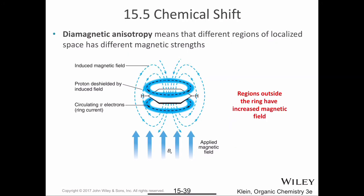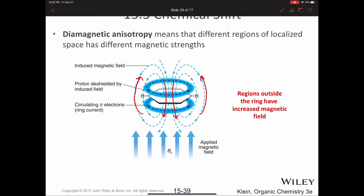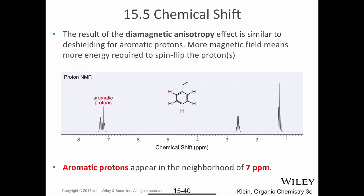Inside the benzene ring, the induced magnetic field goes against the applied magnetic field, but on the outside of the ring the effect is opposite — the induced magnetic field goes in the same direction as the applied magnetic field. The net result is that the protons on the outside of the ring have an increased magnetic field, a greater difference in energy between their alpha and beta spin states, and therefore a higher chemical shift, shifted downfield. As a result of diamagnetic anisotropy, the six protons highlighted in red experience a greater magnetic field and require more energy to spin flip, so aromatic protons appear at around 7 parts per million. The signal just above 7 parts per million represents the five aromatic protons highlighted in red.